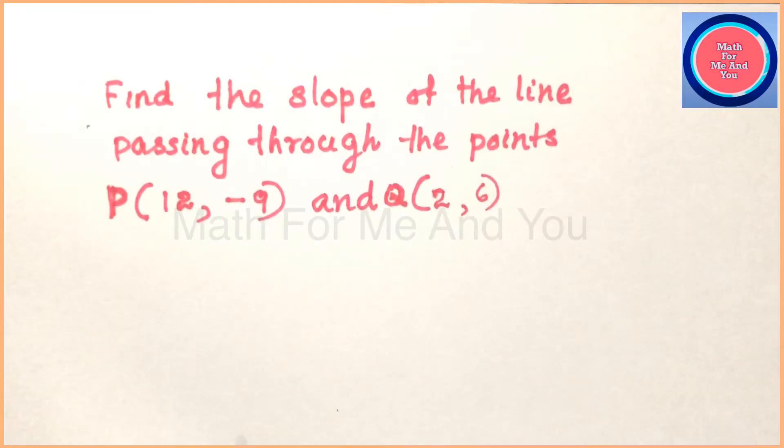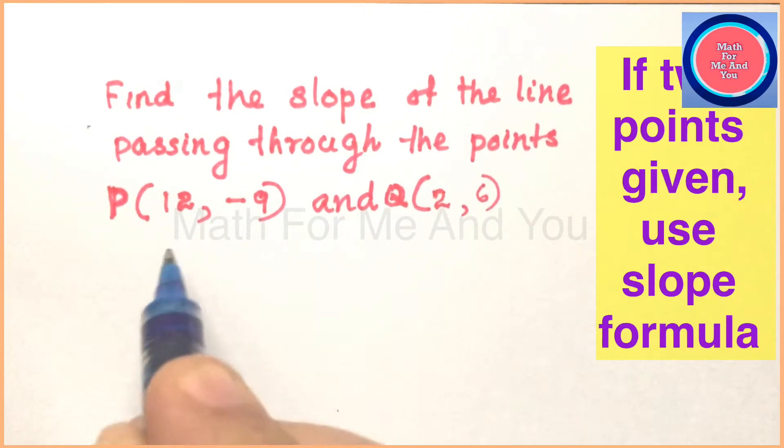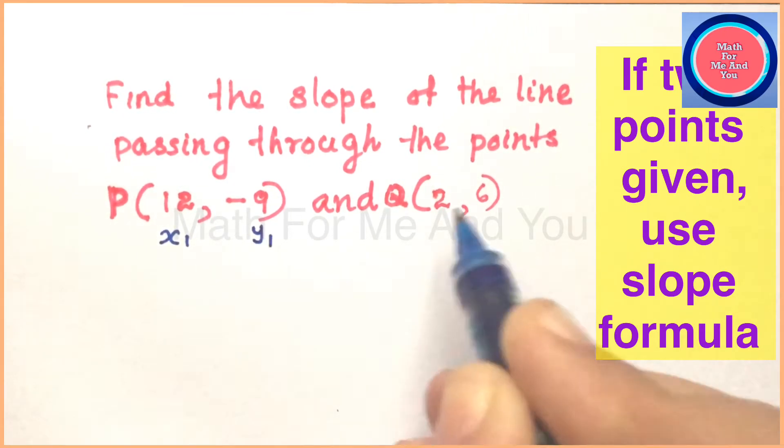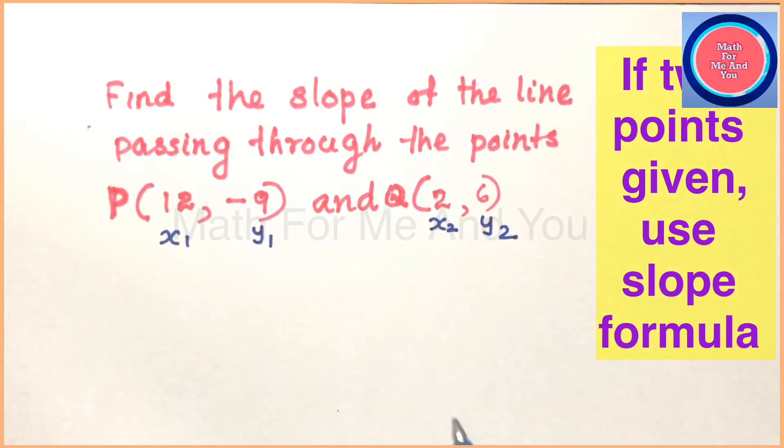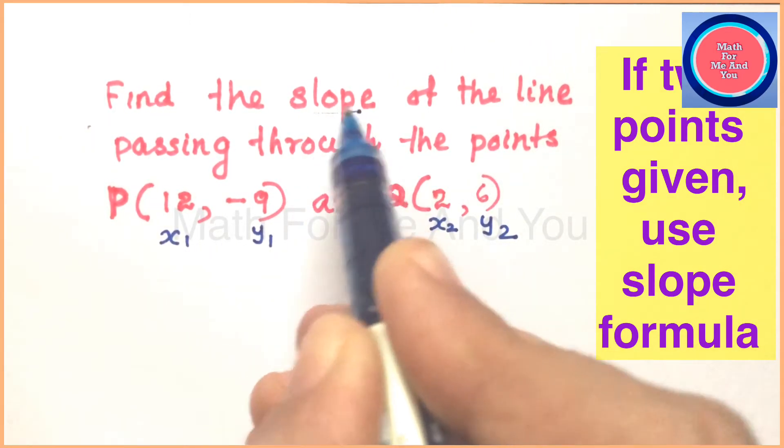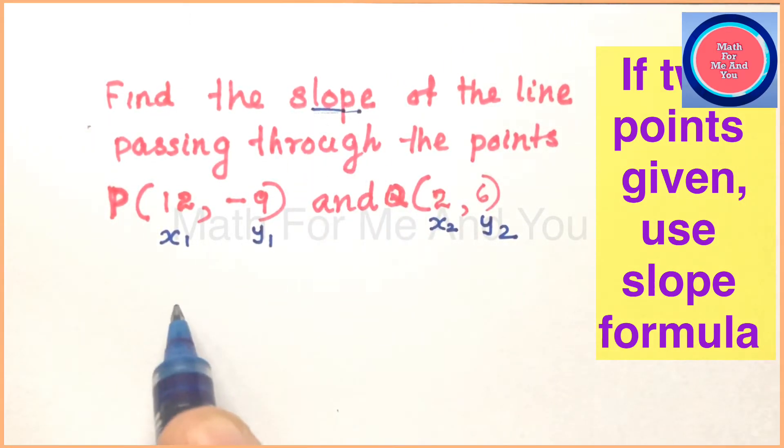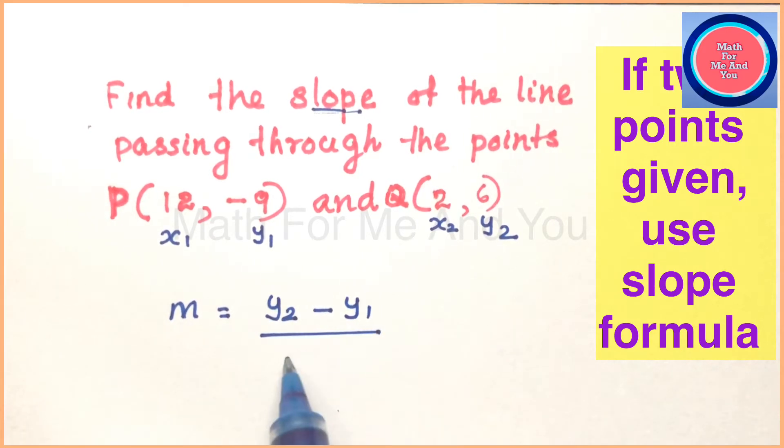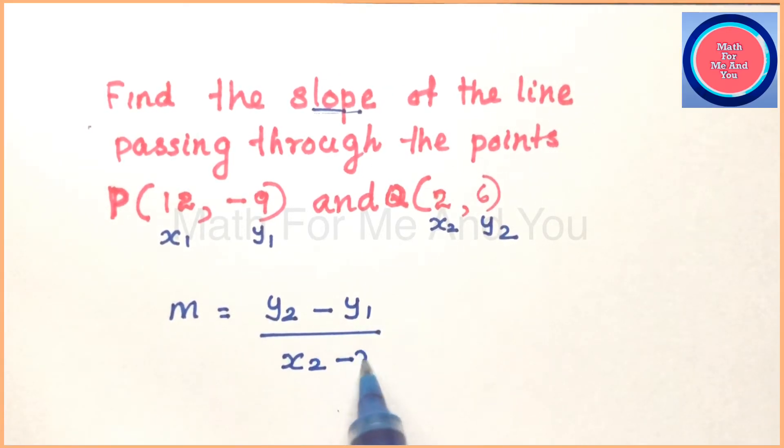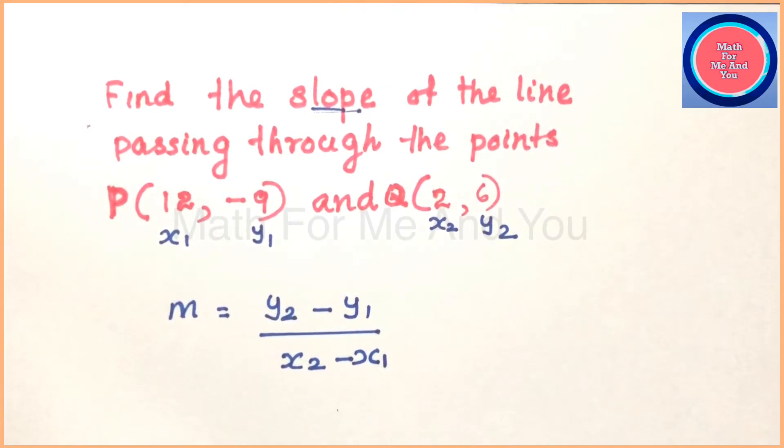Next we can do some practice. Find the slope of line passing through the points P(12, -9) and Q(2, 6). Here we will use slope formula because two points are given. To get the slope we will mark the two points as x1, y1, x2, y2. Then what is slope formula? m equals y2 minus y1 over x2 minus x1.